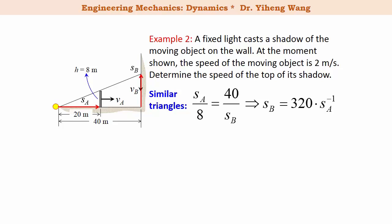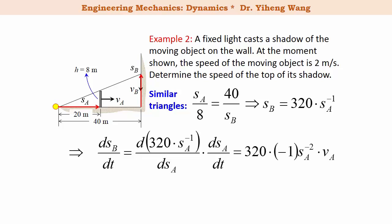And now we can differentiate this entire equation with respect to time. The left hand side is simply dSB/dt, which is the velocity VB that we are looking for. The right hand side, to take the differentiation with respect to time, we can apply the chain rule from calculus. So we find the differentiation of 320 times SA to the negative first power with respect to SA, and then multiply that by dSA/dt. And dSA/dt is the velocity VA that's given.